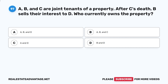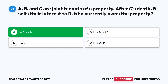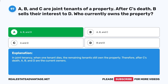Question 97: A, B, and C are joint tenants of a property. After C's death, B sells their interest to D. Who currently owns the property? A. A, B, and D. B. A, B, and C. C. A and D. D. B and D. The correct answer is A, A, B, and D. In joint tenancy, when one tenant dies, the remaining tenants still own the property. Therefore, after C's death, A, B, and D are the current owners.